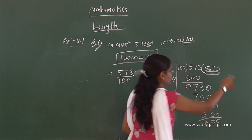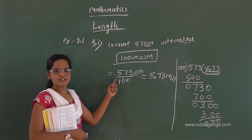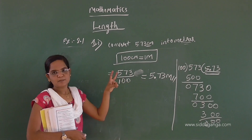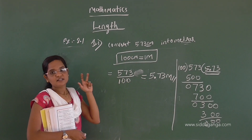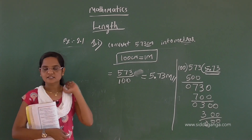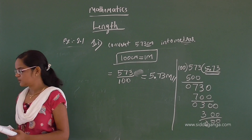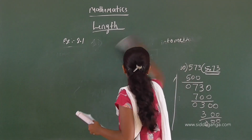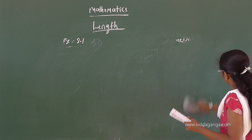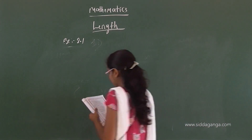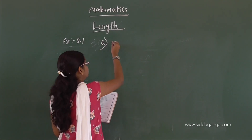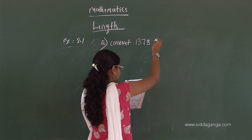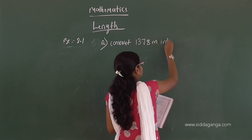So we get the answer 5.73 meters. With denominators of 10, 100, 1000, you can apply this decimal point method directly. Let's take the second question: convert 1378 meters into kilometers.